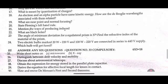Twenty-one: Mention the waves of the electromagnetic spectrum included. Twenty-two: What are black holes? Twenty-three: The angle of minimum deviation for an equilateral prism is 37 degrees — find the refractive index of the material of the prism. Twenty-four: Two electrical bulbs marked 20 W, 220 V and 100 W, 220 V are connected in series to a 440 V supply. Which bulb will get fused?